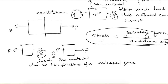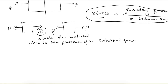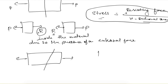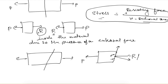For the same block, let's take another section which is inclined. On this inclined section, there is load P, so there will be a resisting force R. But this R will have two components with respect to the inclined surface: a component perpendicular to the surface and a component parallel to the surface. So if we find out the stress in this case, we get two types of stresses: one is normal stress, and the other, which is parallel to the surface, is known as shear stress.